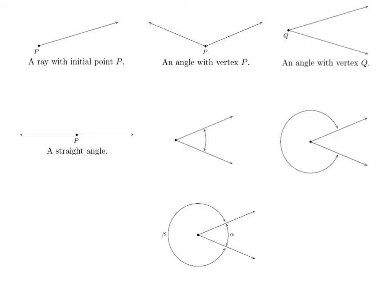In the study of measurements of angles, you will start off with a ray. This is an example of a ray, with an initial point, P.